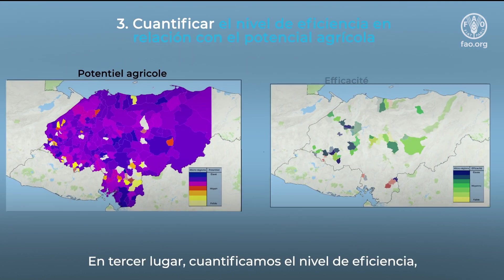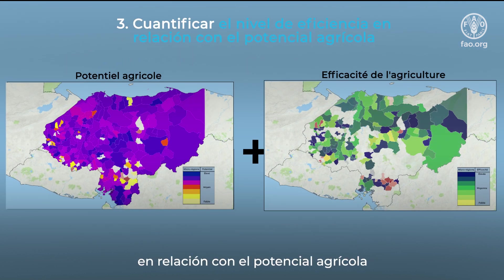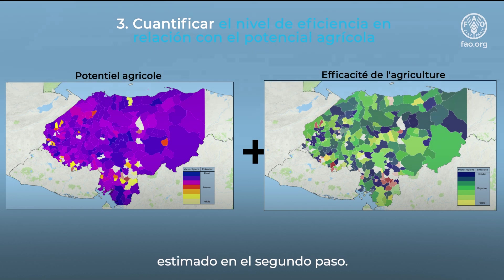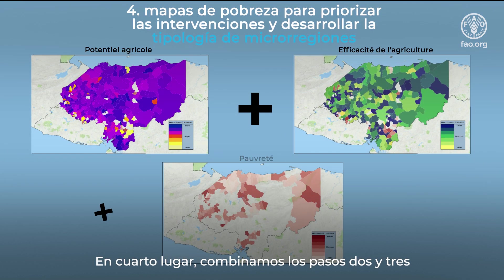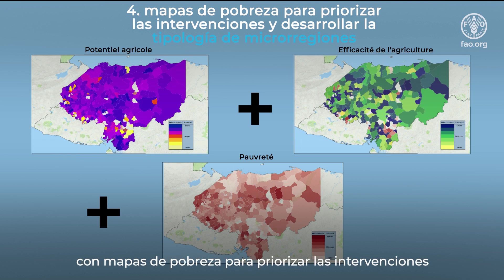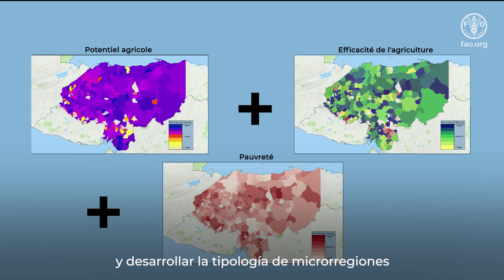Third, we quantify the level of efficiency relative to the agricultural potential estimated in the second step. Fourth, we combine steps two and three with poverty maps to prioritise interventions and develop the typology of micro-regions to be used for the prioritisation of investments.